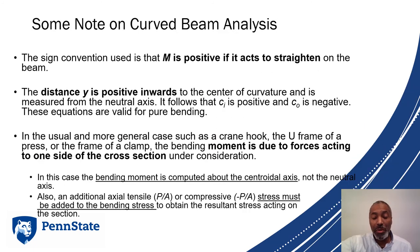Some notes on curved beam analysis. The sign convention uses that M is positive if it acts to straighten the beam. The distance y is positive inwards toward the center of curvature. Up and down don't matter, it's just toward or away from the center. So it follows that ci is positive and co is negative.